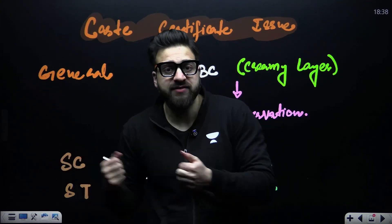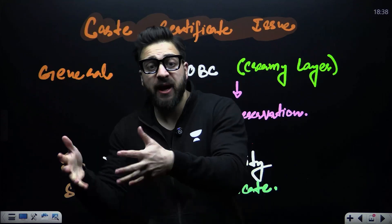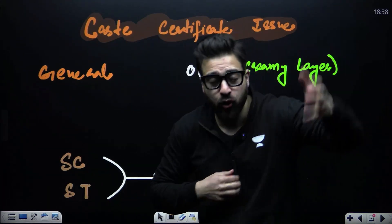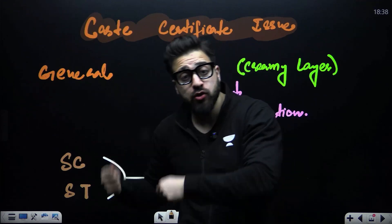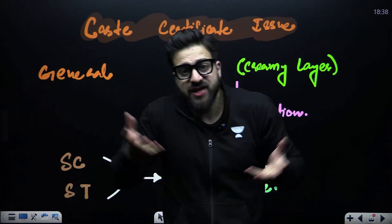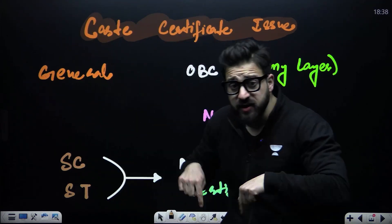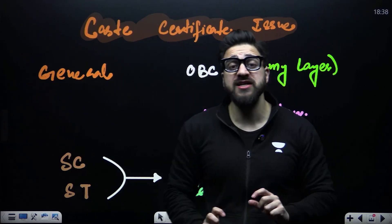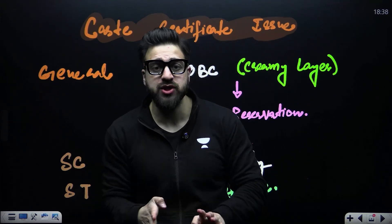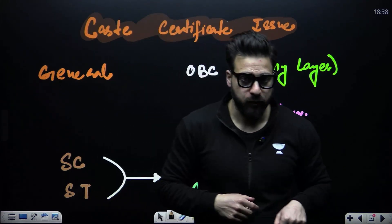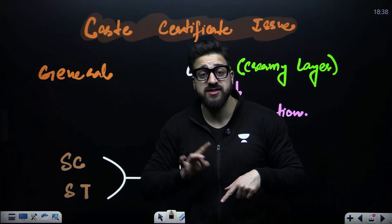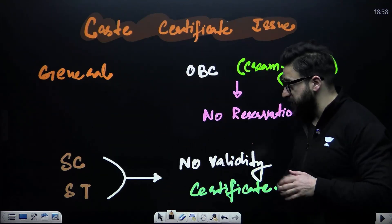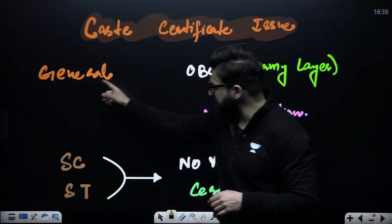A lot of students are in chaos right now, asking: what are we supposed to do? We do not have a CAST certificate. How can we apply? We belong to the general category or OBC category — do we also have to submit a CAST certificate? In this video, I'll be clearing out all of these confusions for students facing this particular problem.